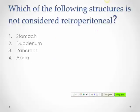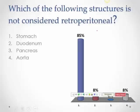The stomach is not considered retroperitoneal — it is intraperitoneal. All the others listed — pancreas, duodenum, aorta, ascending and descending colon — are plastered behind the peritoneal wall and are retroperitoneal.